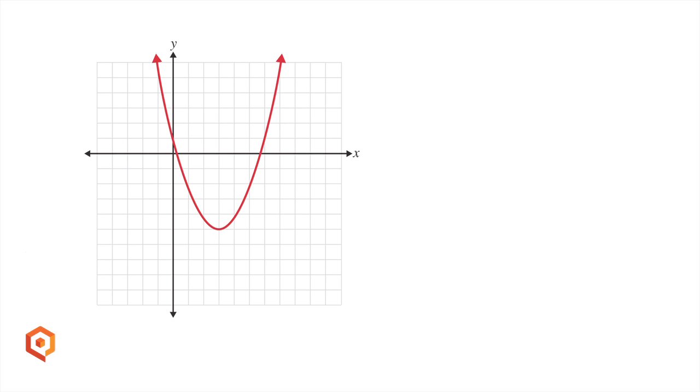Usually these terms first show up when studying quadratic equations and functions. Remember, the graph of a quadratic function is called a parabola, which can have zero, one, or two x-intercepts.